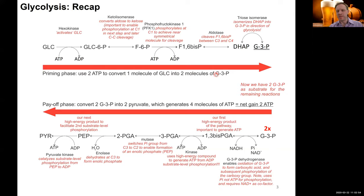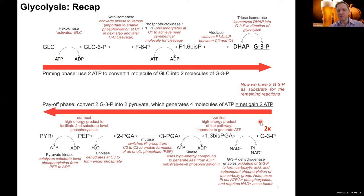This is what we call the priming phase — getting ready for the real meat of glycolysis. We have used two ATP to catalyze the conversion of one molecule of glucose into two molecules of G3P. Keep in mind: we now have two molecules of G3P, so everything in the next payoff phase happens twice. The first step in the payoff phase involves another phosphorylation of these two G3P molecules, but importantly this is not a kinase reaction using ATP as donor.